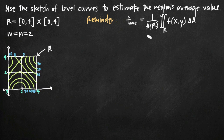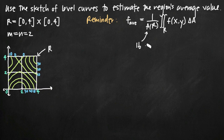The first thing we need to realize is that A(R), the area of the region, is already 16, because our region is 4 units wide by 4 units tall. 4 times 4 is 16, so we're going to plug in 16.